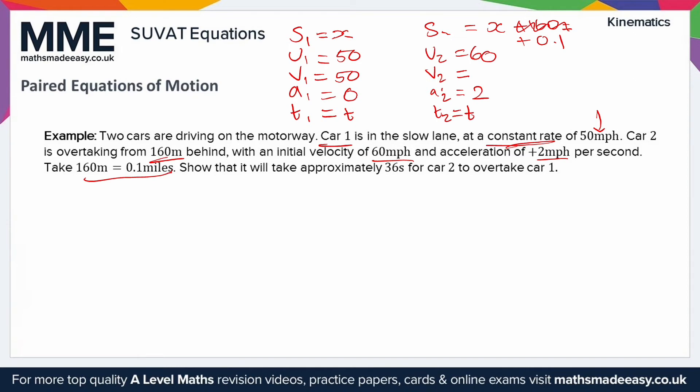Right, we can form some equations now. We've got S, we've got U, we've got A, and we've got T, so that means we're going to use S equals UT plus half AT squared. It should cancel down pretty nicely. The reason being A is 0, so this whole term here is going to disappear. We're going to have x equals UT. Well, U is 50, we don't know T, so x is 50T. A very simple linear equation.